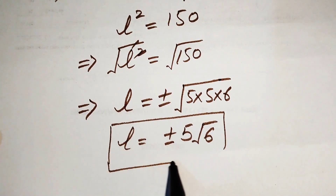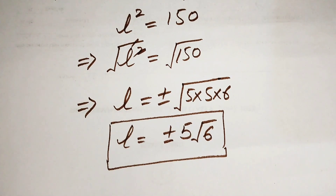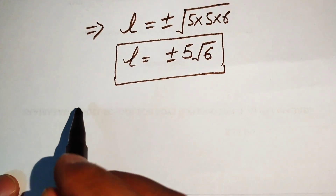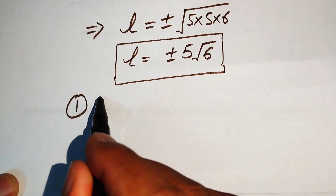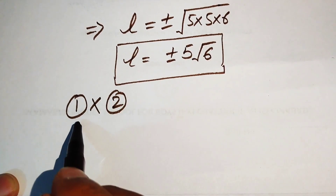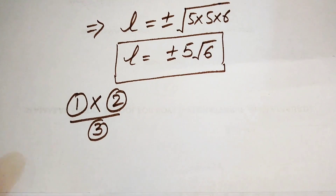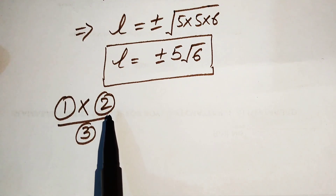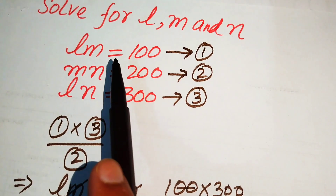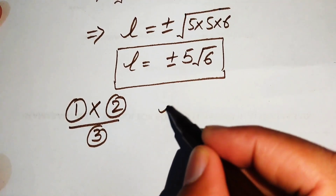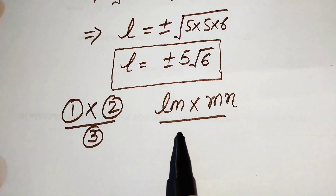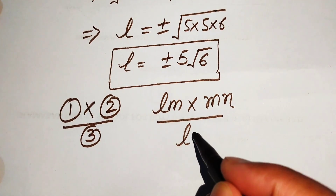So L equals plus or minus 5 times square root of 6. These are the two values of L. Now we move to find the value of M. We multiply equation number 1 by equation number 2 and divide by equation number 3. This means we multiply the left-hand side of equation 1, which is L·M, by the left-hand side of equation 2, which is M·N, and divide by the left-hand side of equation 3, which is L·N.